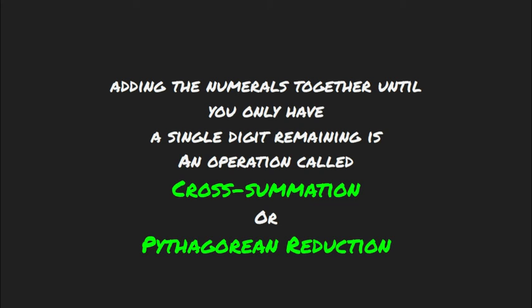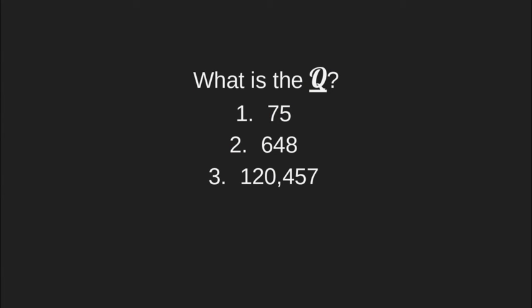What is the quality of the following quantities? We have here three numbers listed: 75, 648, and 120,457. We will add the numerals together until we get a single digit, and that will be its quality. Let's find the quality of these numbers.